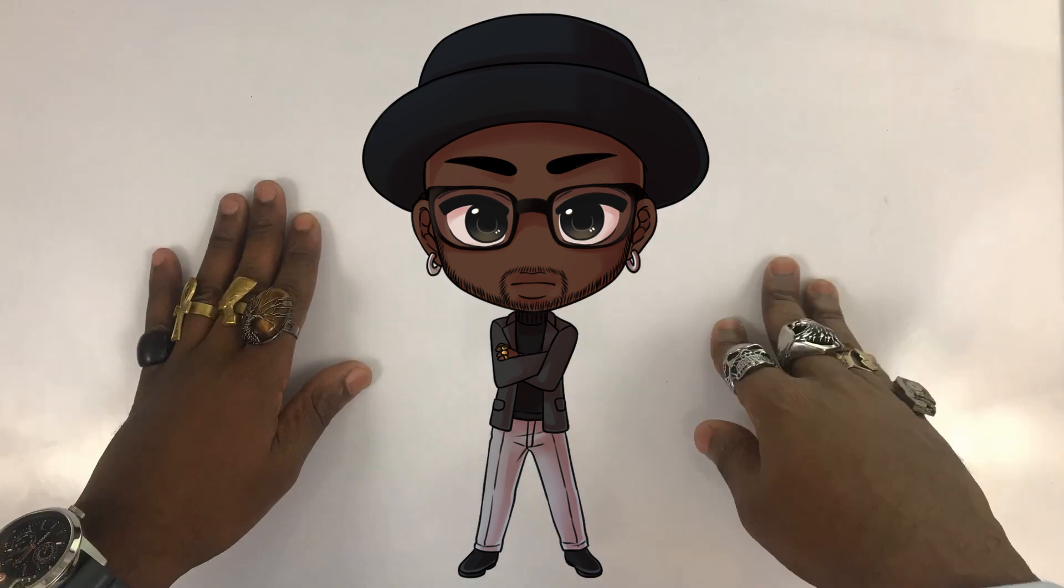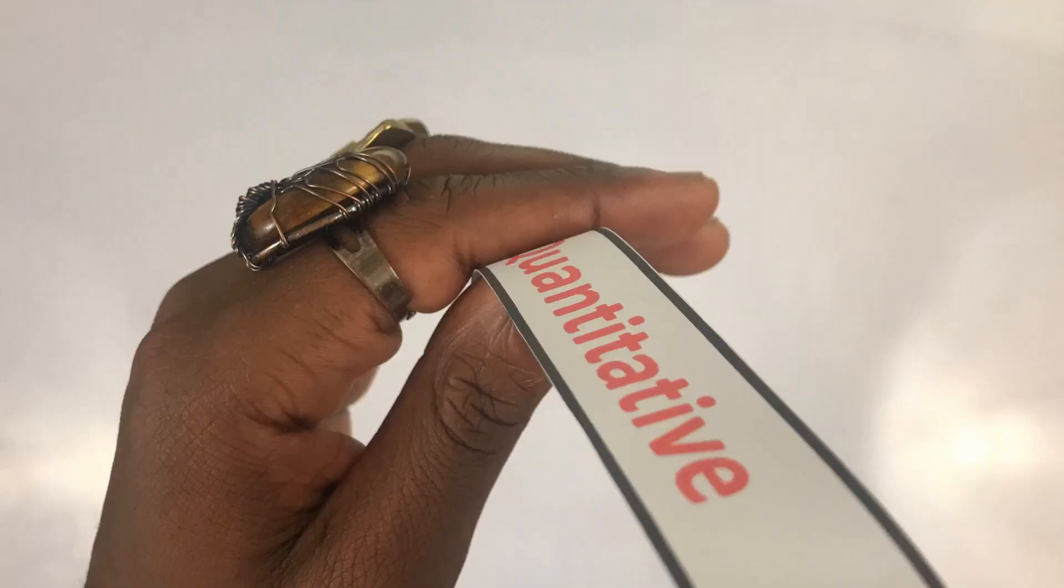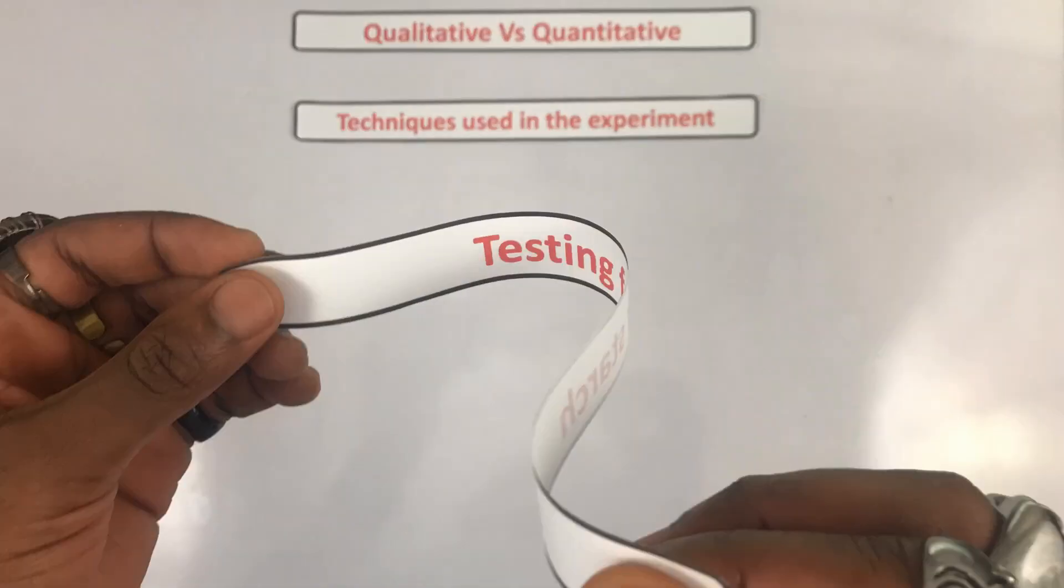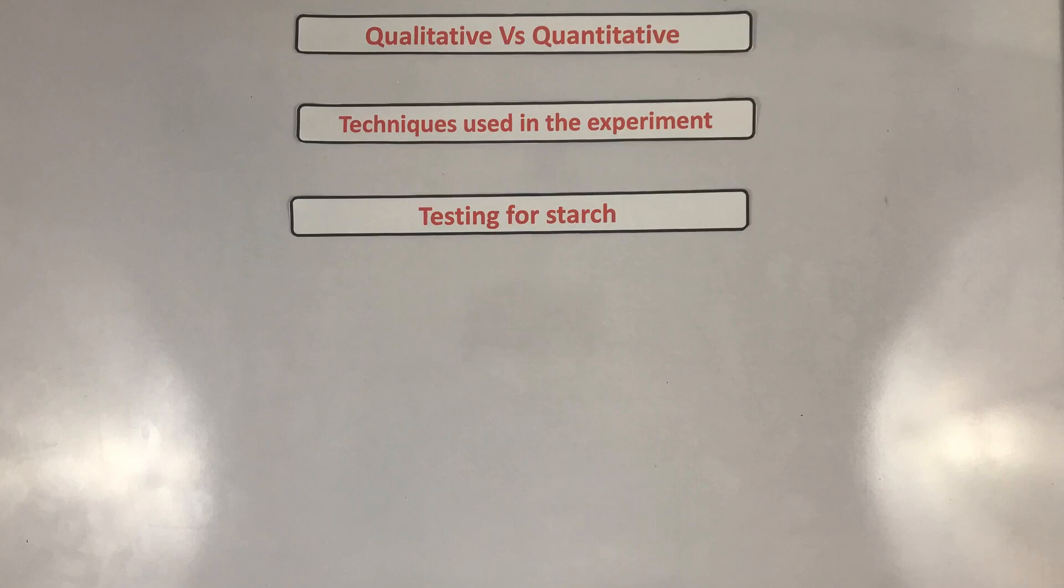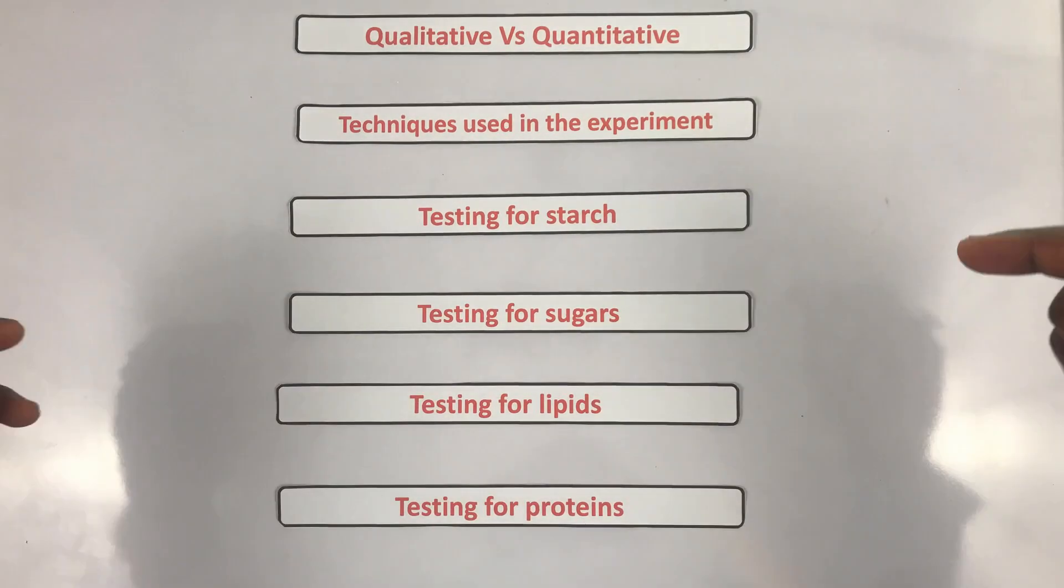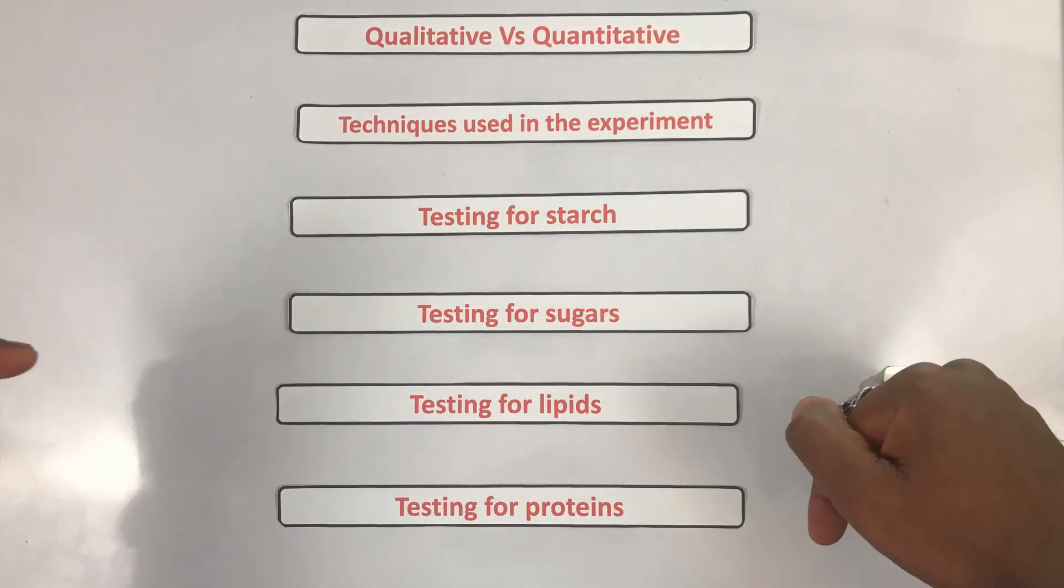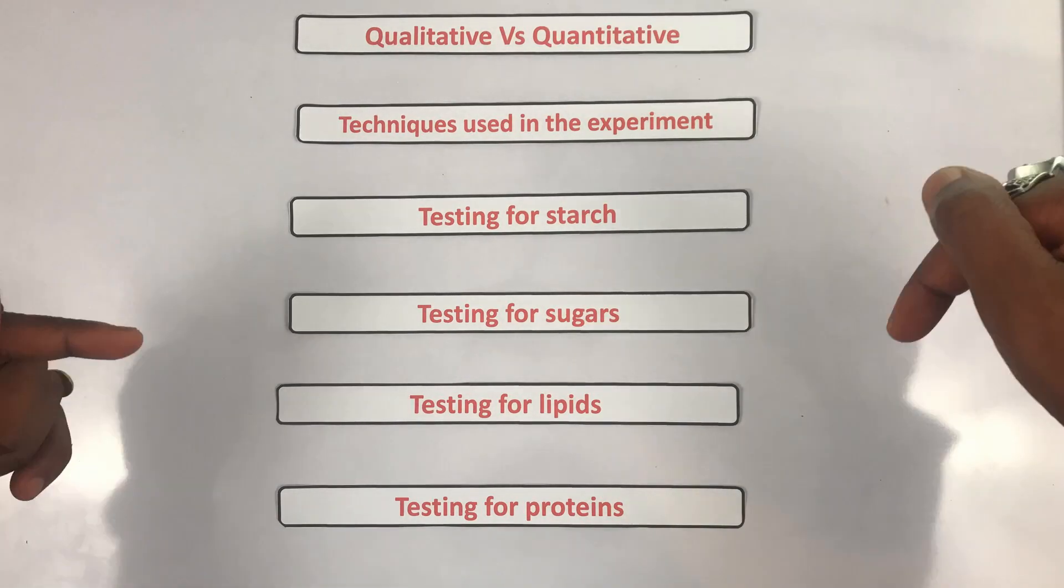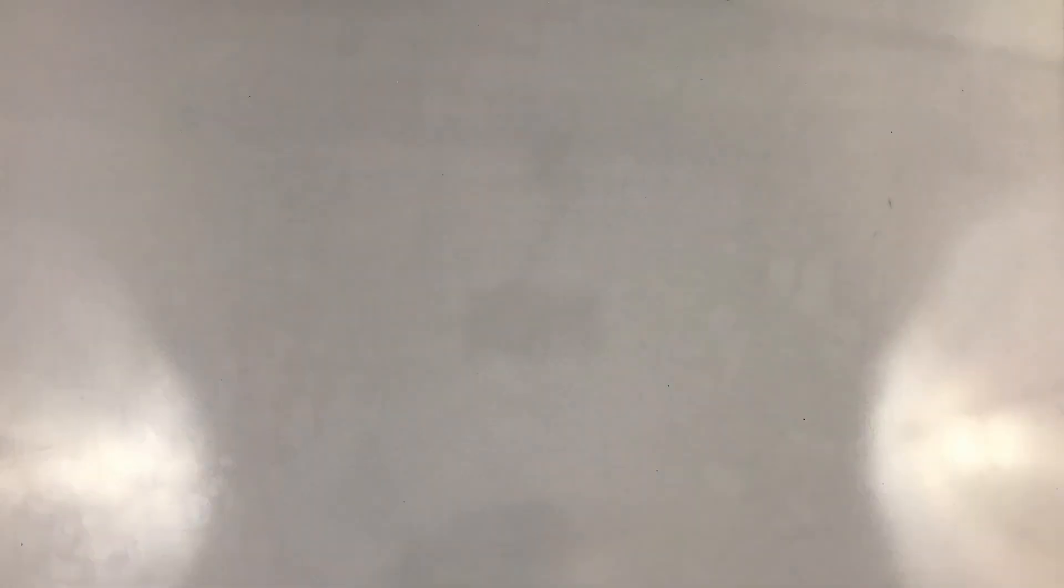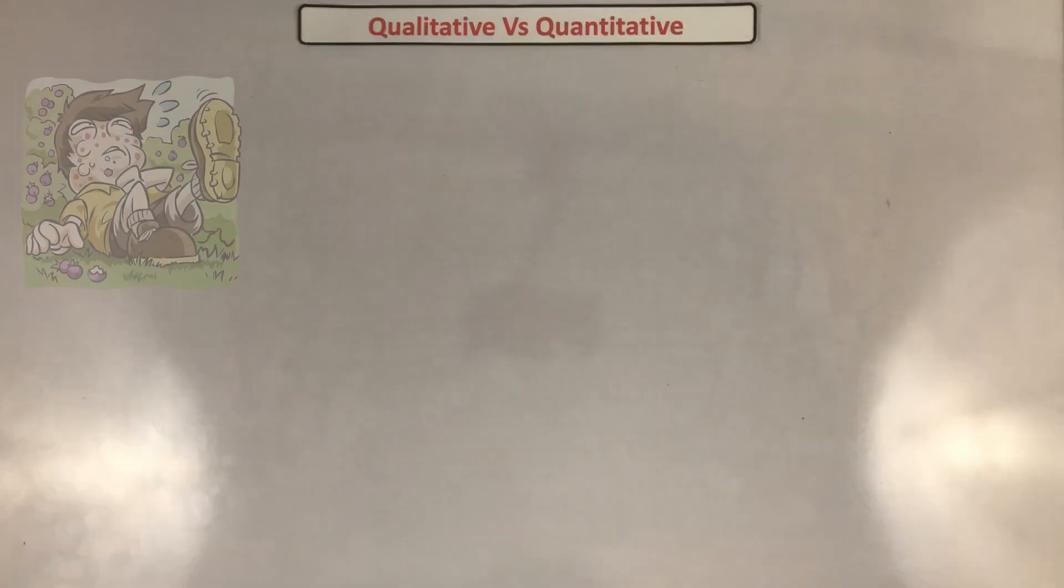In this video we'll be looking at: number one, qualitative versus quantitative data; number two, techniques that you're going to use in the experiment; number three, the test for starch; number four, the test for sugars; number five, the test for lipids; and finally number six, the test for proteins. As always, check out the description with the timestamps there, and while you're down there check out the worksheet for today's lesson and also the answers to last week's lesson.